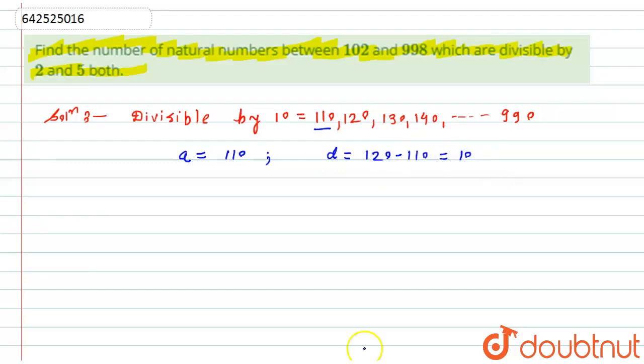Now similarly, if I look at this series, the last term means the nth term is nothing but 990. Hence here I can say that an is nothing but 990, that is the nth term.